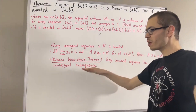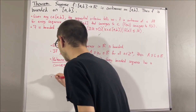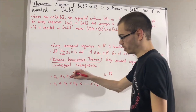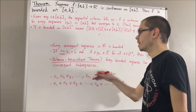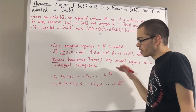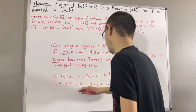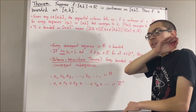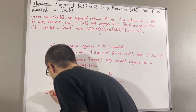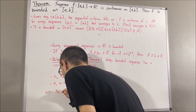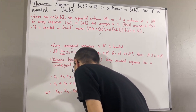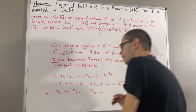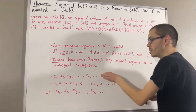Let's remind ourselves what a subsequence is. If x1, x2, x3, and so on is a sequence of real numbers, and n1, n2, n3, and so on is a strictly increasing sequence of positive integers, then the sequence xn1, xn2, xn3, and so on is a subsequence of this sequence.